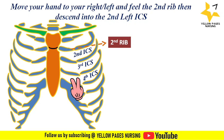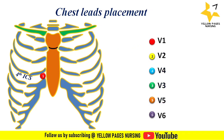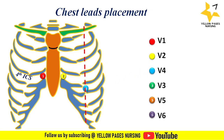V1 is placed on the fourth intercostal space to the right of the sternum. V2 is placed on the fourth intercostal space to the left of the sternum. V1 and V2 are kept close to the sternum. V4 is placed on the fifth intercostal space at the left mid-clavicular line.